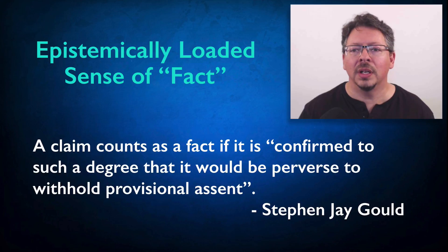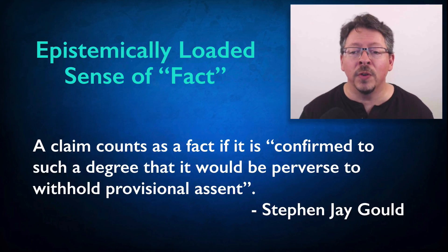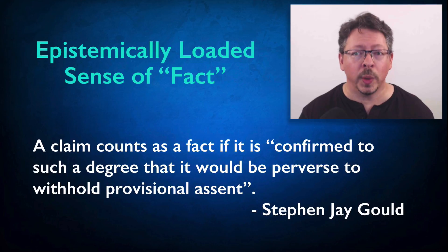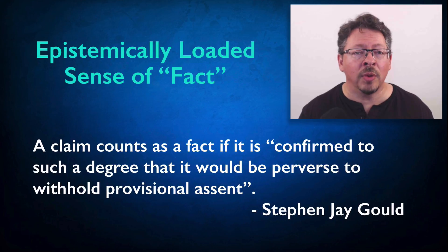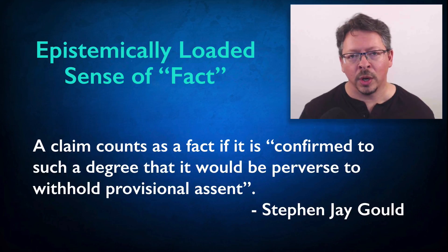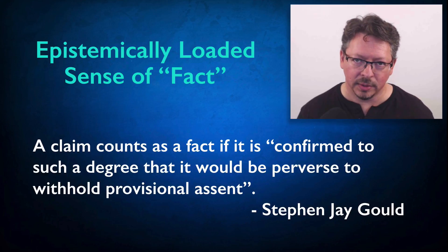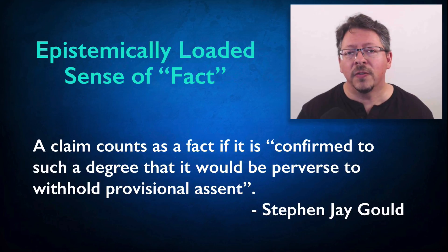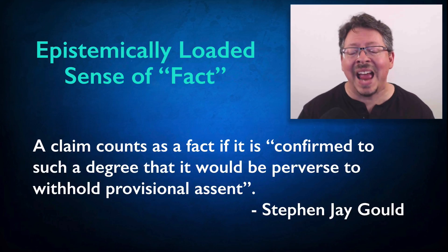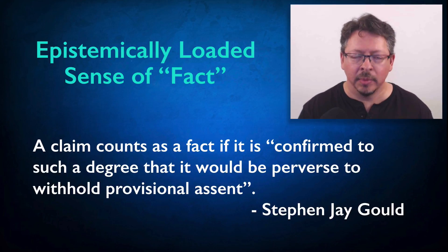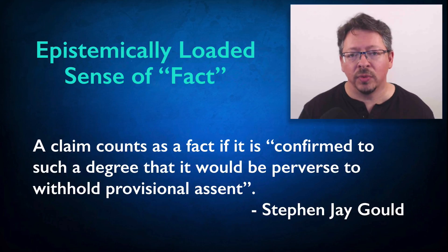This is the way the evolutionary biologist Stephen Jay Gould uses the term fact when he talks about the fact of evolution. For Gould, a claim counts as a fact if it is — I quote — 'confirmed to such a degree that it would be perverse to withhold provisional assent.' Assent means agreement, and perverse in this context means irrational. Once you're familiar with the relevant evidence, it would be irrational to disagree with the claim that all organisms on earth are descended from a common ancestor. It's provisional agreement, meaning for the time being — given what we know right now, it would be irrational to challenge this claim. But that doesn't mean evidence couldn't appear in the future that could give us reasons to change our minds.